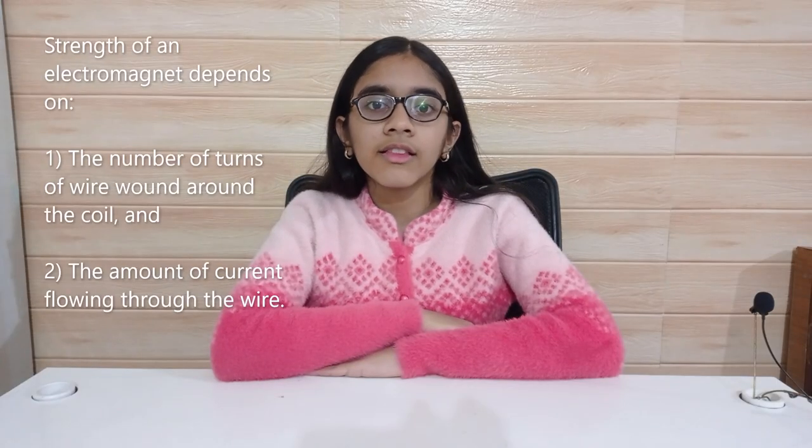The strength of an electromagnet depends on the number of turns of wire wound around the coil and the amount of current flowing through the wire.